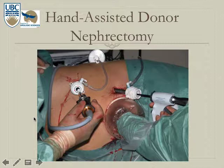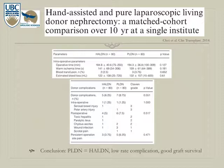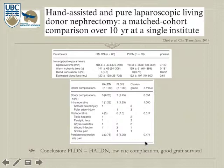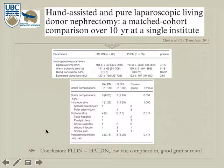Hand-assisted donor nephrectomy is common because the extraction port is already in place, potentially reducing warm ischemic time. A 10-year study comparing hand-assisted versus pure laparoscopic donor nephrectomy found no significant difference in operative time, warm ischemic time, blood transfusion, or estimated blood loss. Complication rates were very low in both groups, with only one Clavien Class 3 complication in each group. The conclusion was that both techniques are equivalent, though pure laparoscopic may be preferred given its similarly low complication rate and good graft survival.